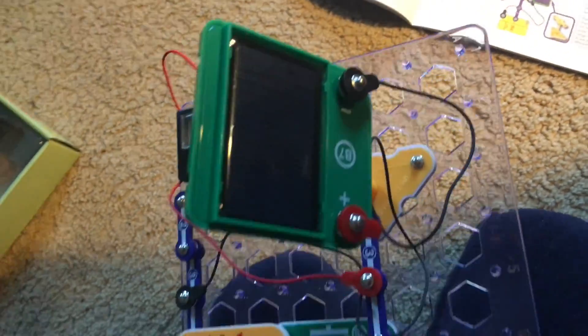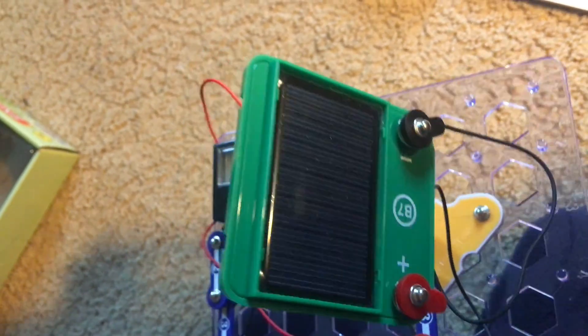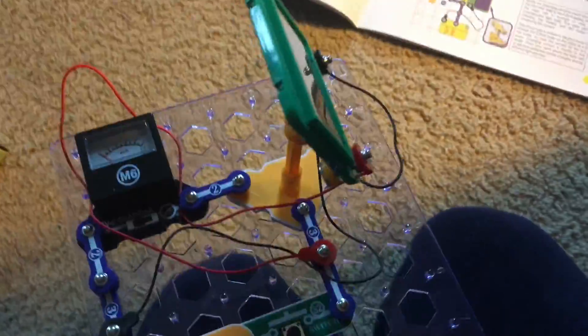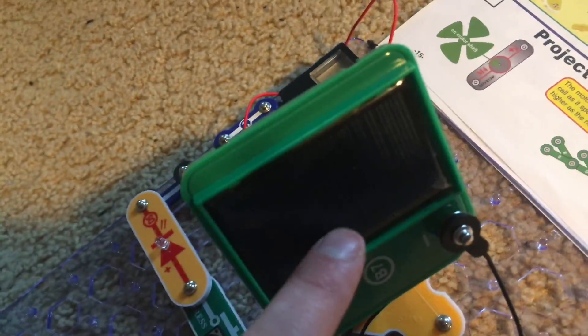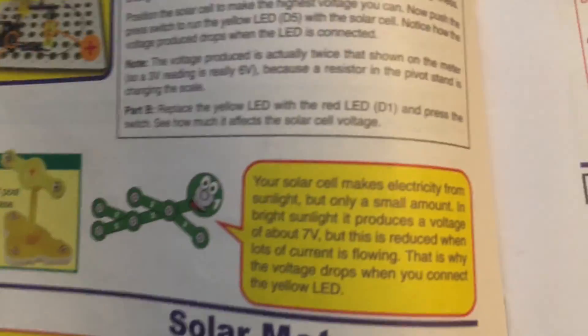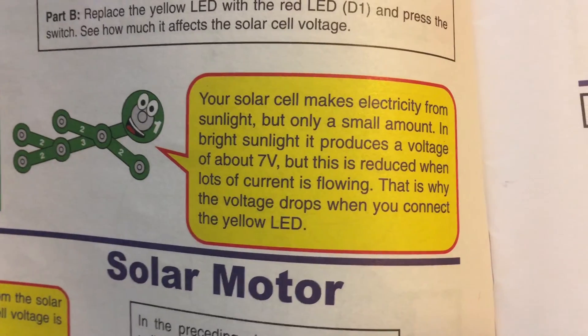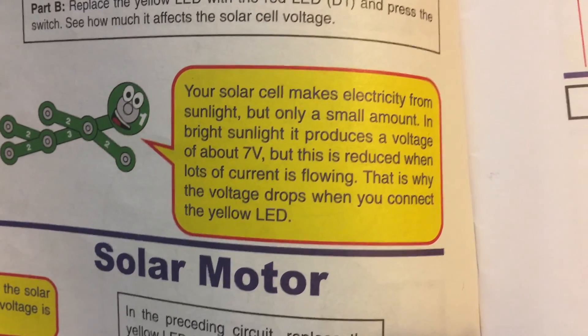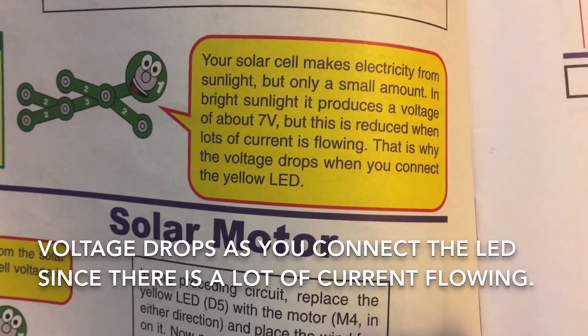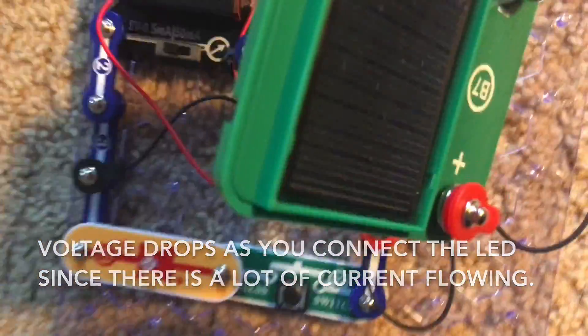When light reaches a solar panel or cell, the photons from light are converted into electricity by the cell. And therefore, it can be used. Now this particular solar cell makes only a very small amount of energy. But there are other much larger solar panels that can produce considerably more power from sunlight. Here it produces a voltage of about 7 volts. But because the current comes in a very large amount, it is reduced. And the voltage will drop when the LED comes on.